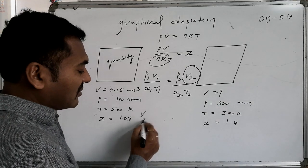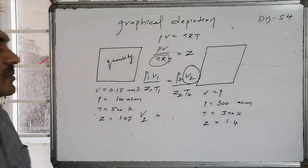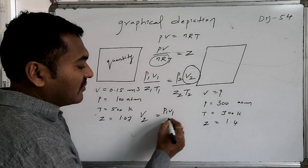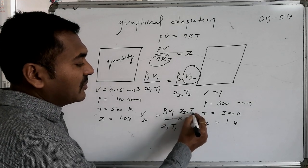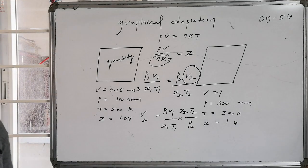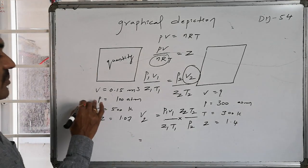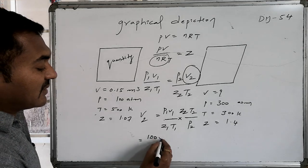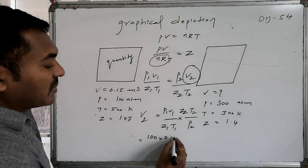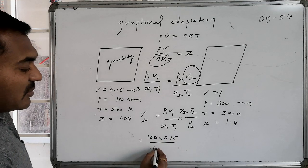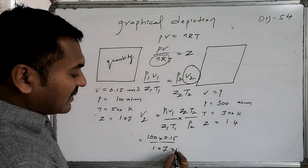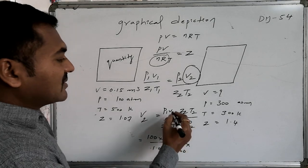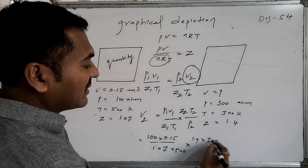If we substitute properly, then V₂ will become equal to P₁V₁ by Z₁T₁ times Z₂T₂ by P₂. Whereas P₁V₁ becomes equal to how much? P₁V₁ becomes equal to 100, V₁ will become equal to 0.15, Z₁ will become equal to 1.07, whereas T₁ is 500, into Z₂ is 1.4, T₂ is 300, whereas P₂ is once again 300.